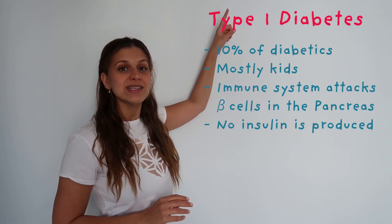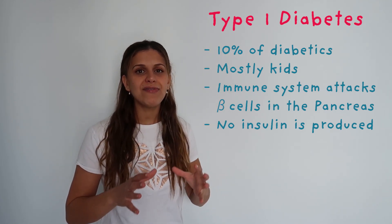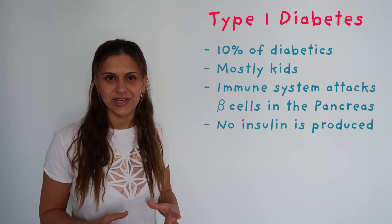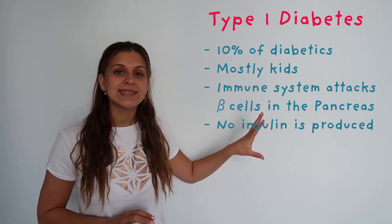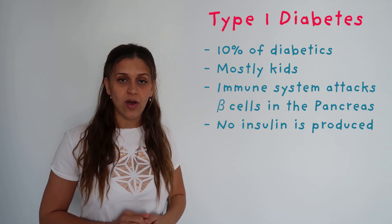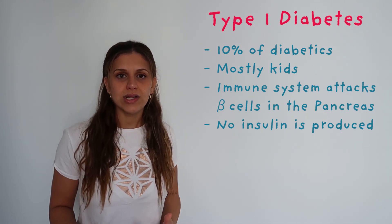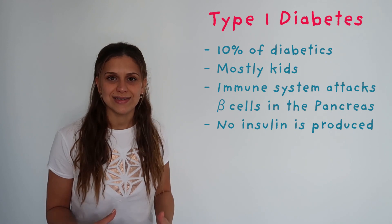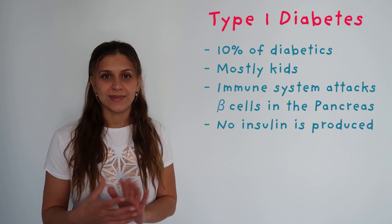Because there are different reasons why the sugar remains in the bloodstream, diabetes is split into different types. The first type is type 1 diabetes, which makes up roughly 10% of the whole diabetic population and is mostly found in kids. What happens here is that the immune system attacks the beta cells in the pancreas, so the pancreas cannot produce insulin or does not produce enough insulin. Because there's no insulin, the glucose will not enter the cells.